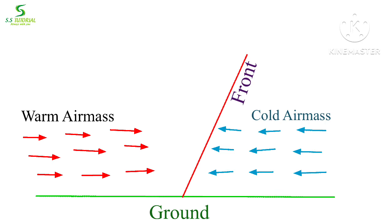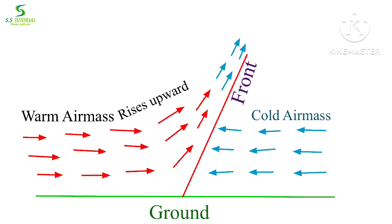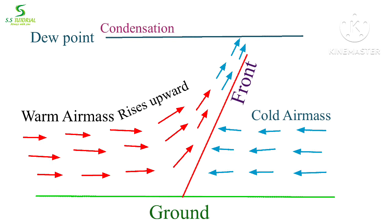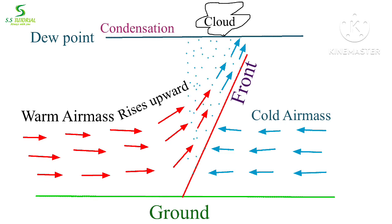Let's learn the formation process of frontal rainfall. When warm air mass and cold air mass meet, they create a front. As warm air mass is lighter, it rises upward and expands, then it begins to cool adiabatically. After reaching the dew point, condensation takes place and it forms clouds.